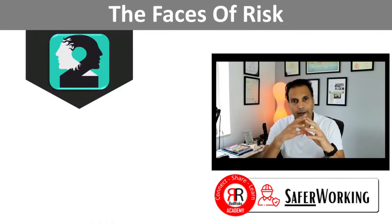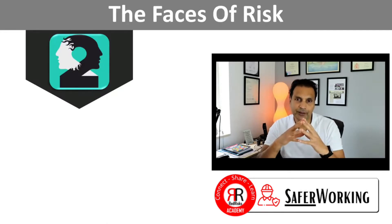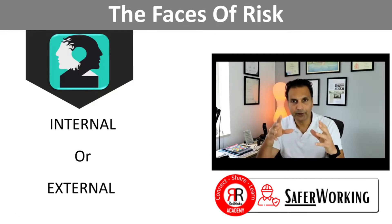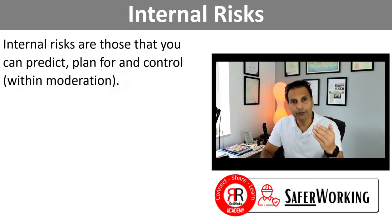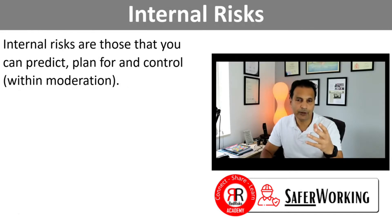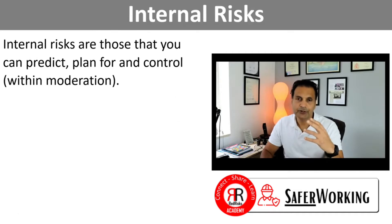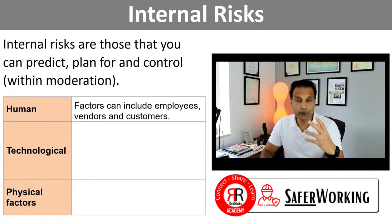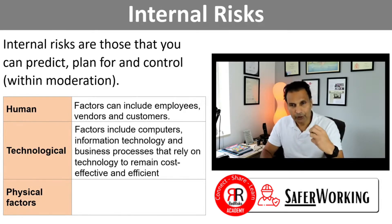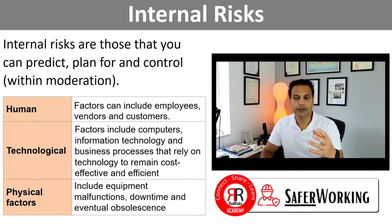There are really two faces to risk, and you can think of them as internal or external facing risks. Internal risks are those that you can really predict, plan for, and control within moderation. Human risks include things such as employees, vendors, and customers. Technological risks include things such as IT, and physical factors which include equipment malfunctions, downtime, and eventual obsolescence.